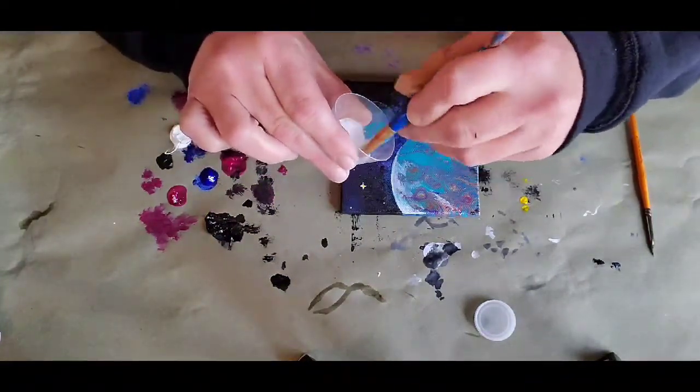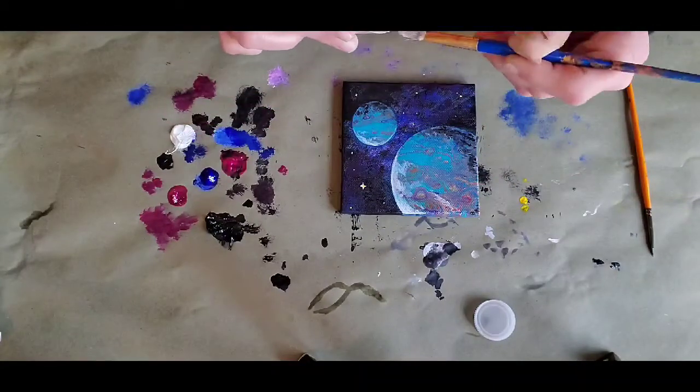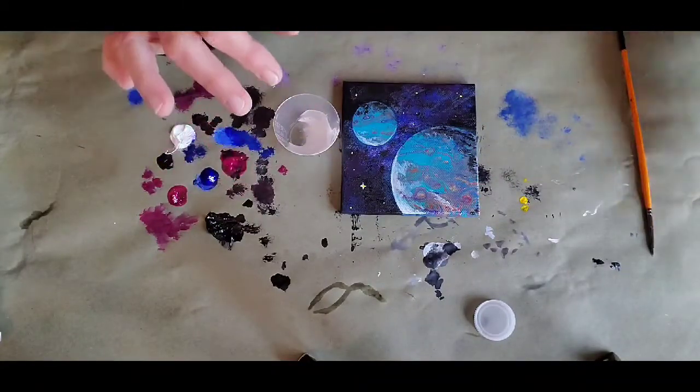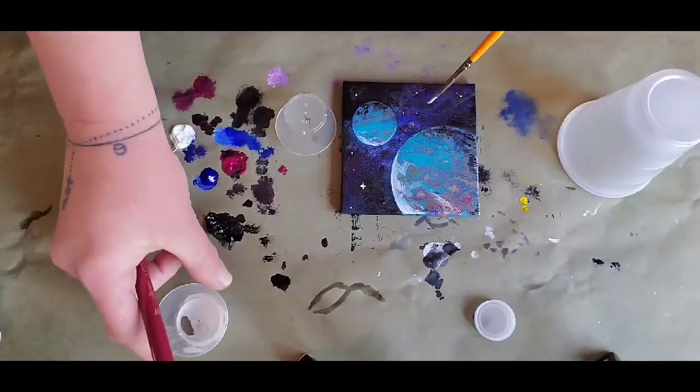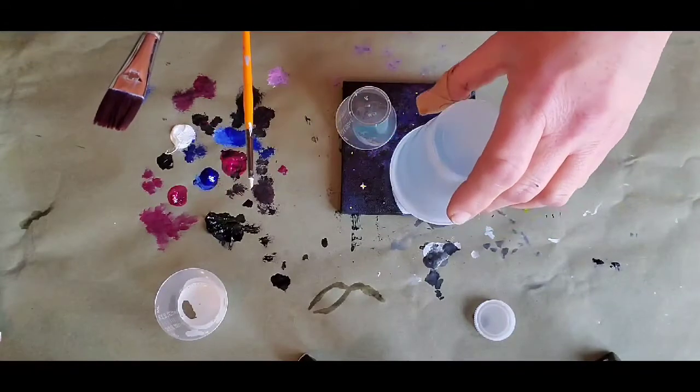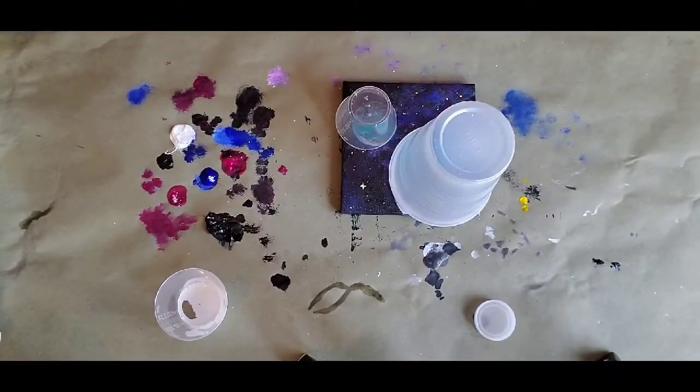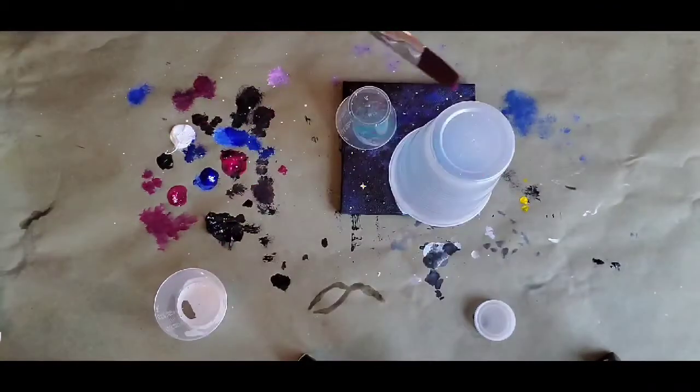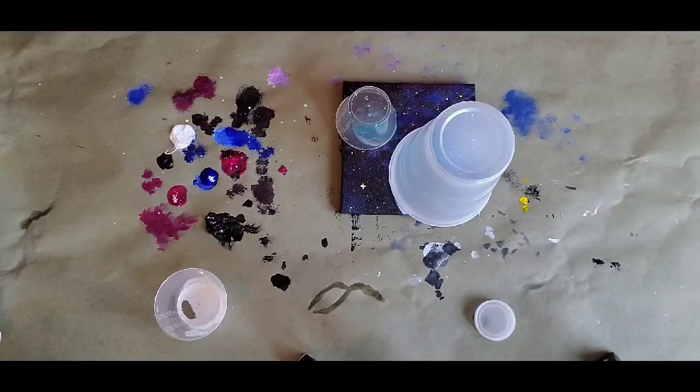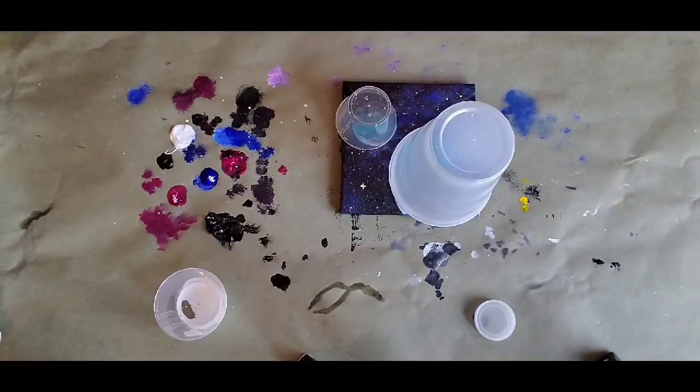I'm mixing my star water now. You want to use white paint and mix it with water. You want to make sure that it still coats and it doesn't run, but you want it to just be a little bit creamier than the water. The smaller the brush you use, the smaller your stars will be, and the larger brush you use, the larger your stars will be.